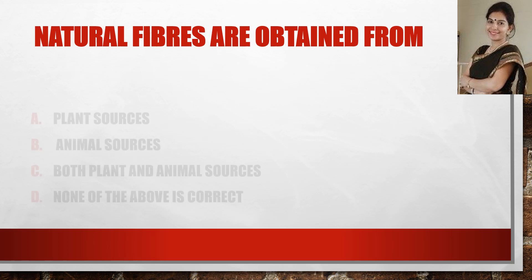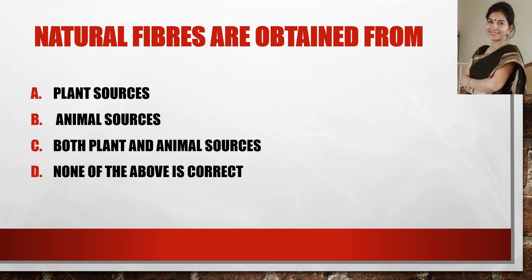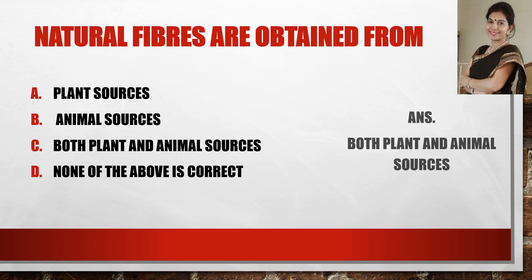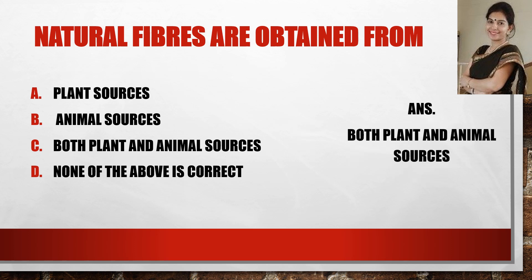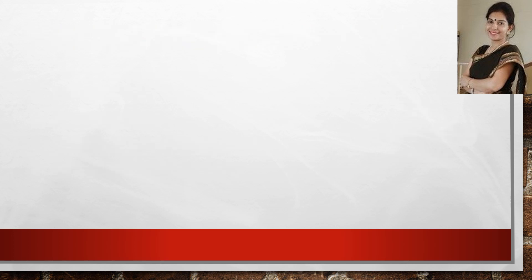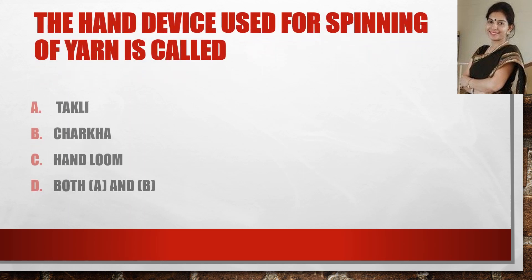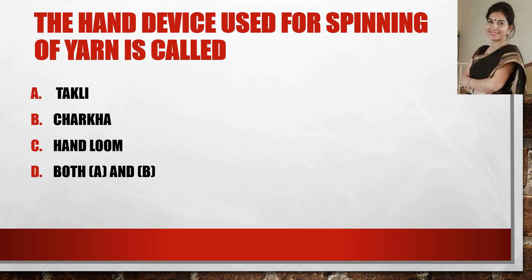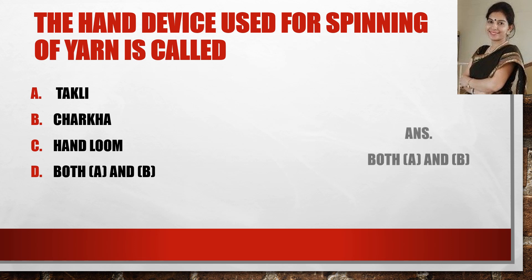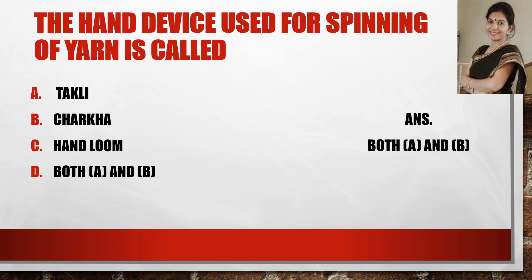Next question: natural fibers are obtained from — and those who have answered as both plant and animal sources are correct. Now the next question: the hand device used for spinning of yarn is called — and both takli and charkha are the correct answer.